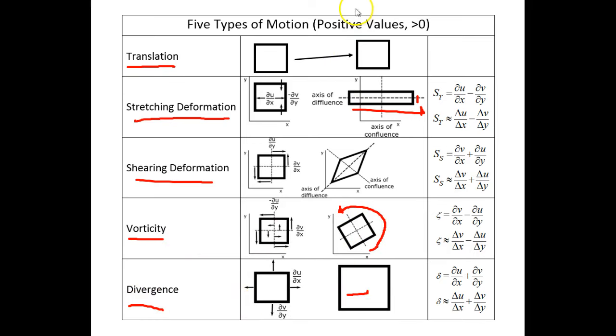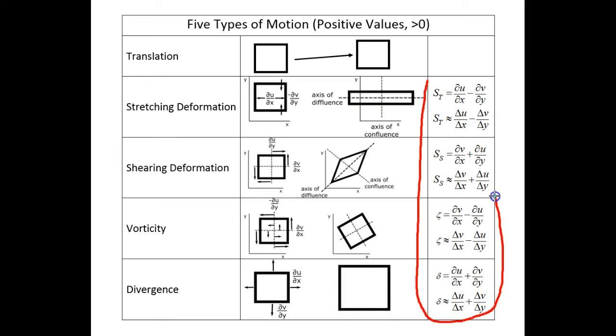The last four types can be represented by combinations of the partial derivatives of horizontal velocities u and v with respect to horizontal directions x and y.